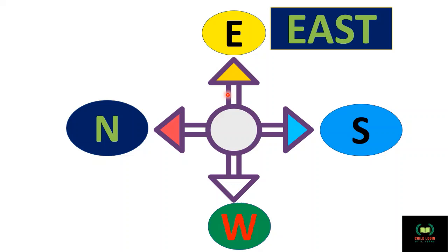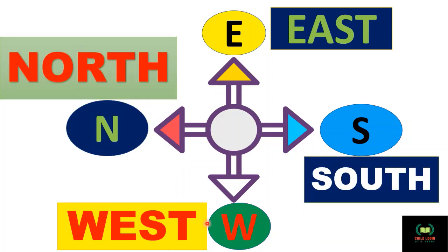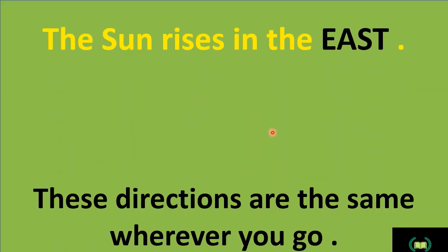So this direction is east. East, west, north, south - these are four directions. See here, the sun rises in the east. 'Suri ka udai kidhar se hota hai? Purva disha se.' East is called 'purva disha.'